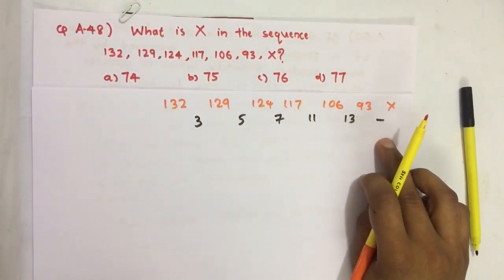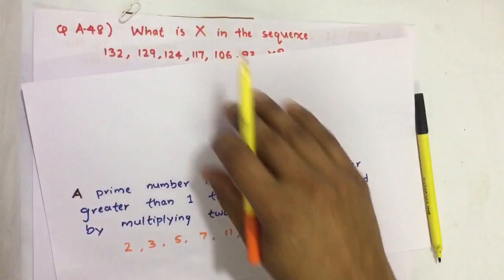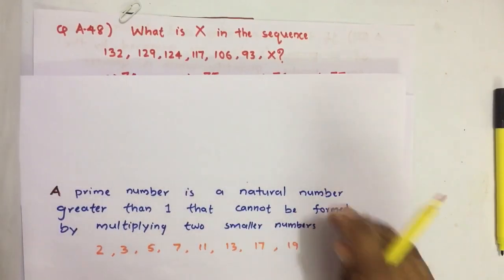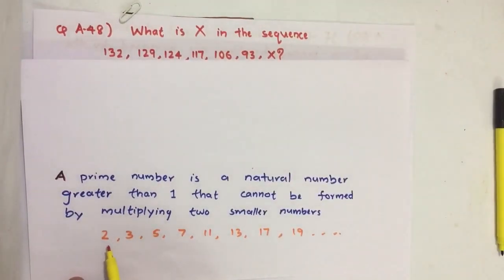Yes, these are prime numbers. So what is a prime number? A prime number is a natural number greater than one that cannot be formed by multiplying two smaller numbers.